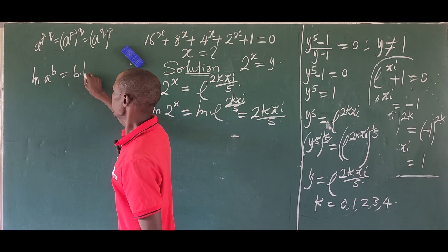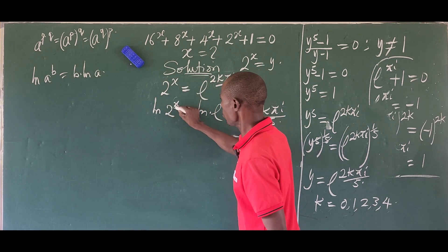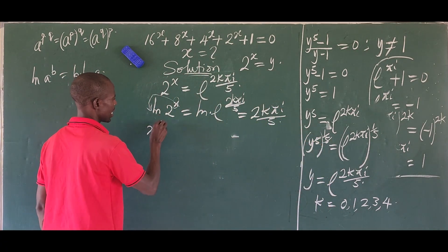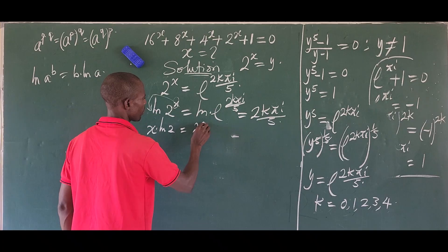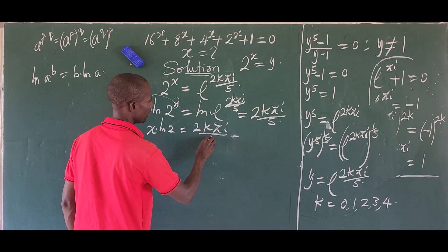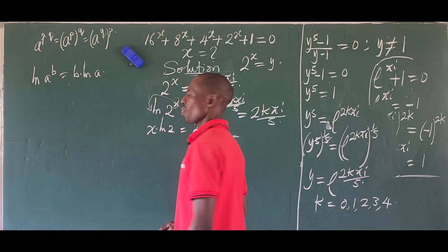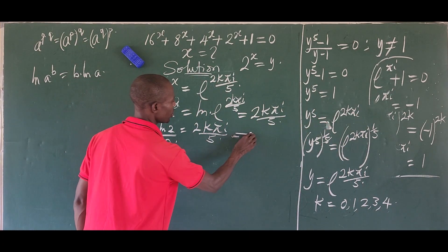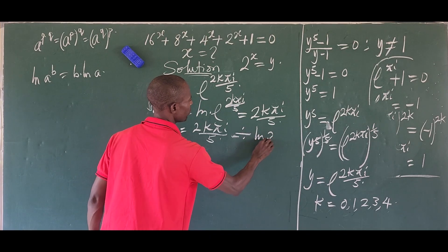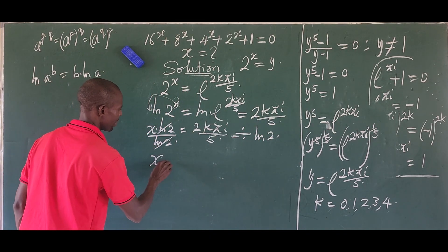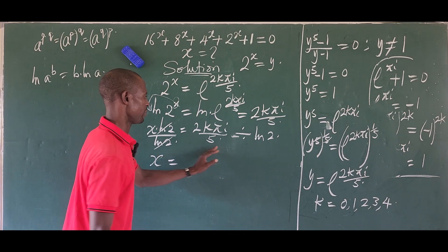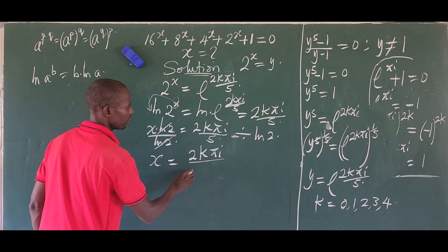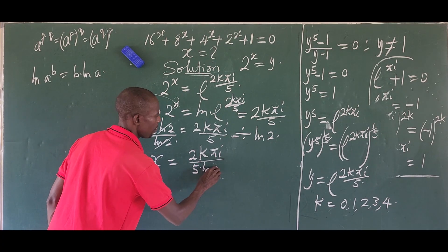On the left side we apply the logarithmic law: ln of a to the power of b equals b times ln of a. So we move x to get x times ln 2 equals 2kπi over 5. Dividing both sides by ln 2, we get x equals 2kπi all over 5 times ln 2. This is the general value of x that satisfies this equation.